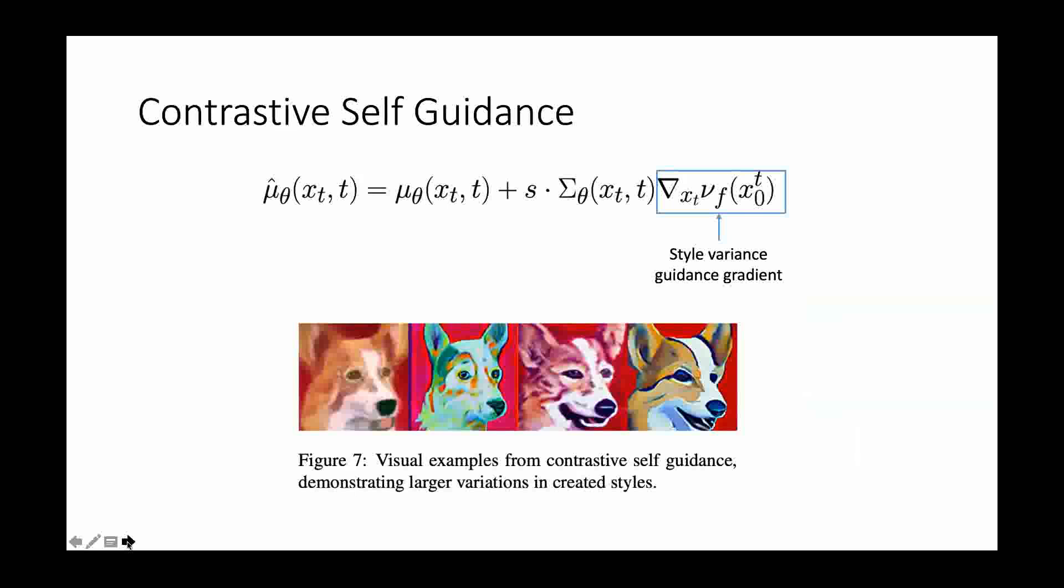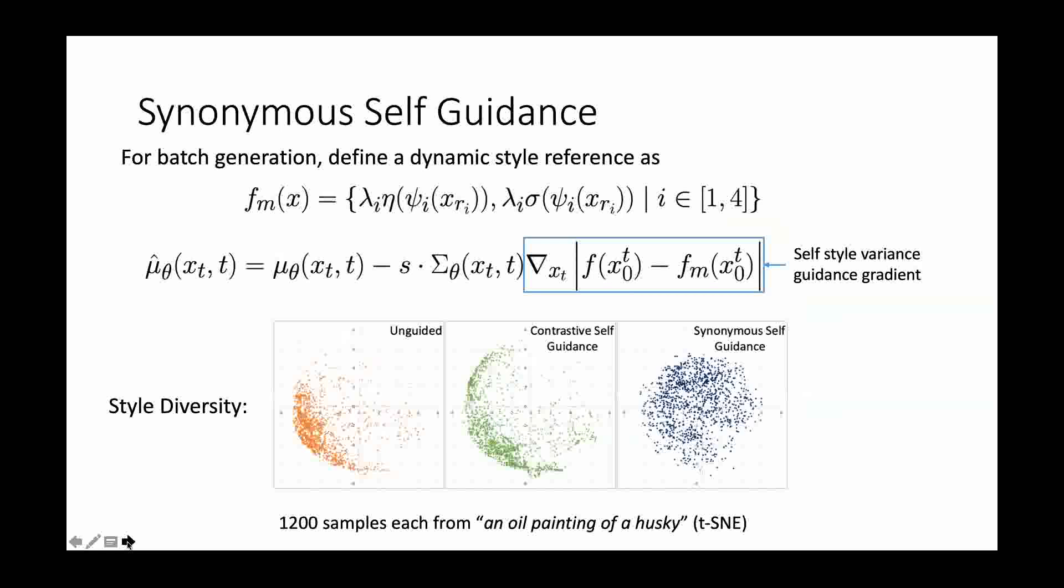We have also proposed two self-guidance methods. The first one is the contrastive self-guidance, which aims to increase the style feature variations for images generated in the same batch.